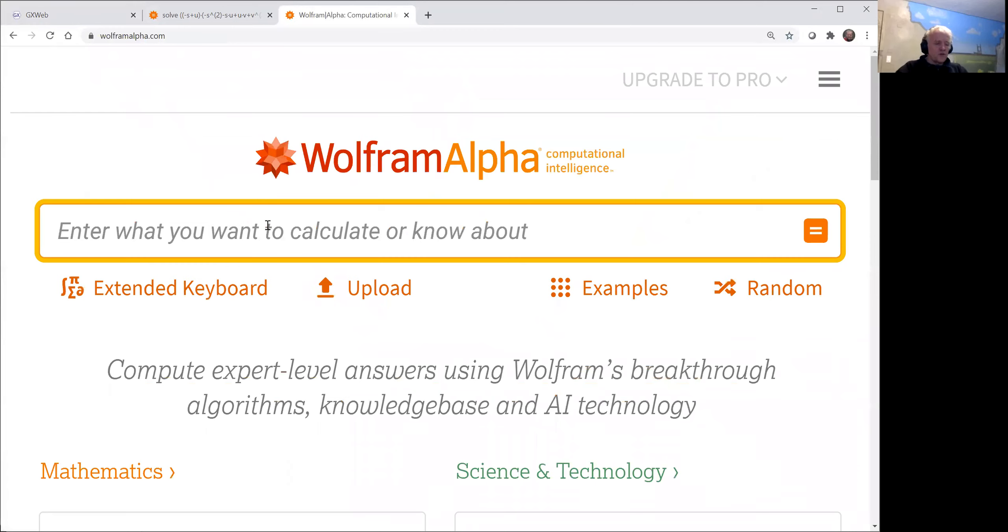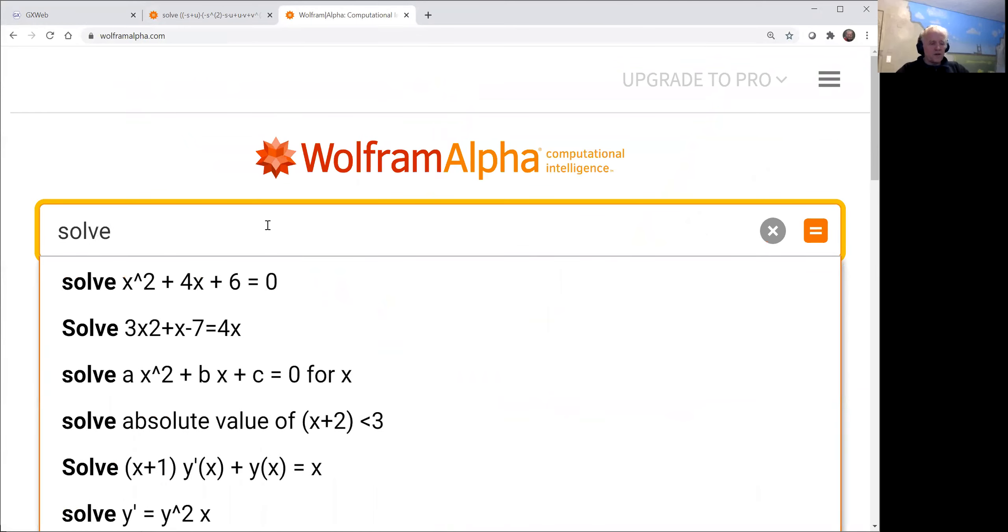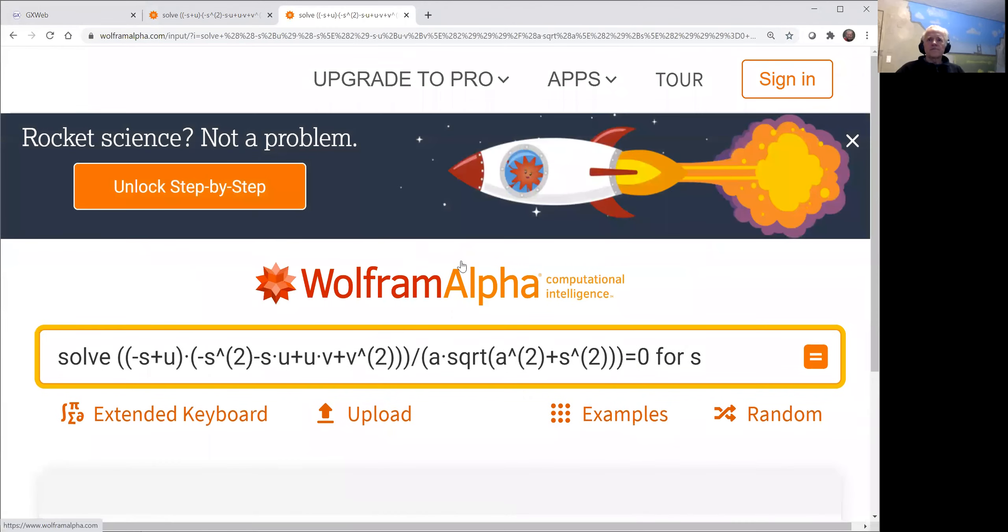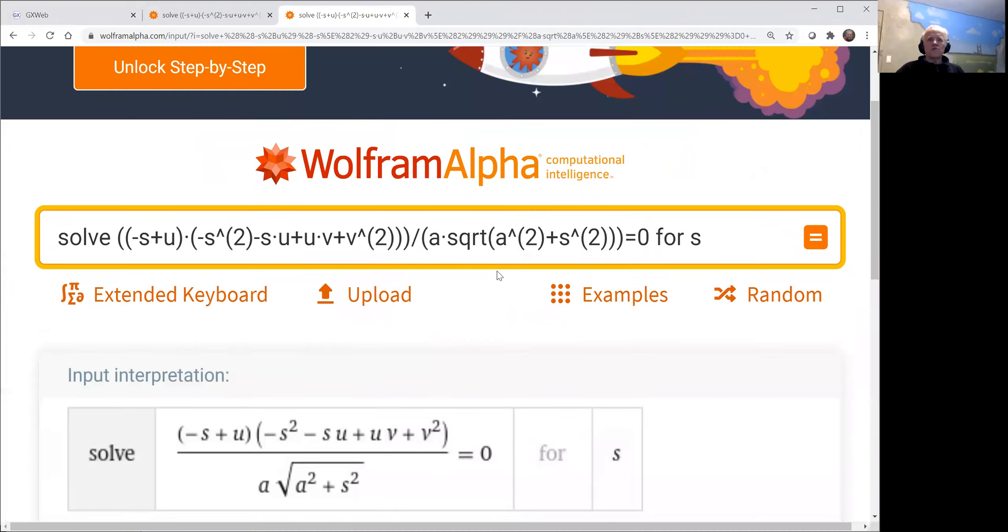What we'd like to do is solve. And we paste that thing in. And we solve that thing equals zero for s. Now it's always useful to check that Wolfram Alpha has interpreted what you wanted correctly. And it has done. It's solved with this thing for s.